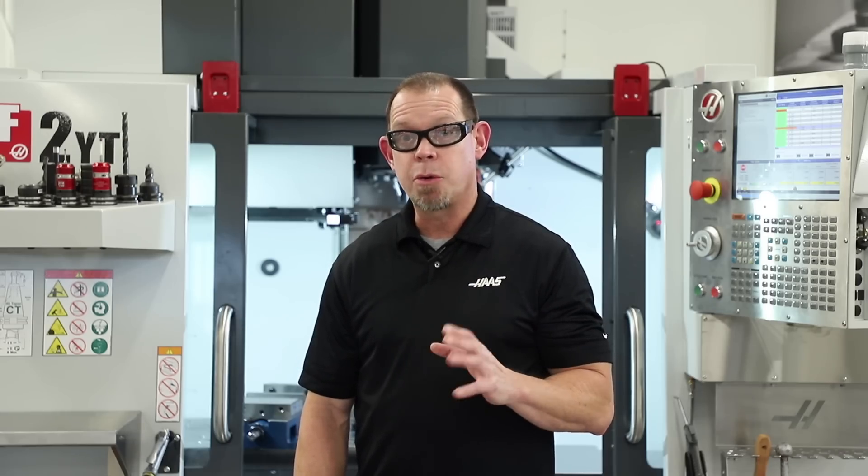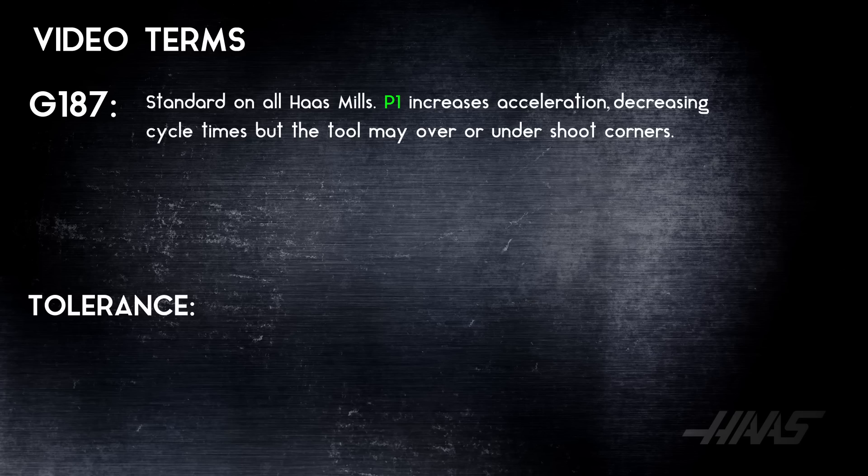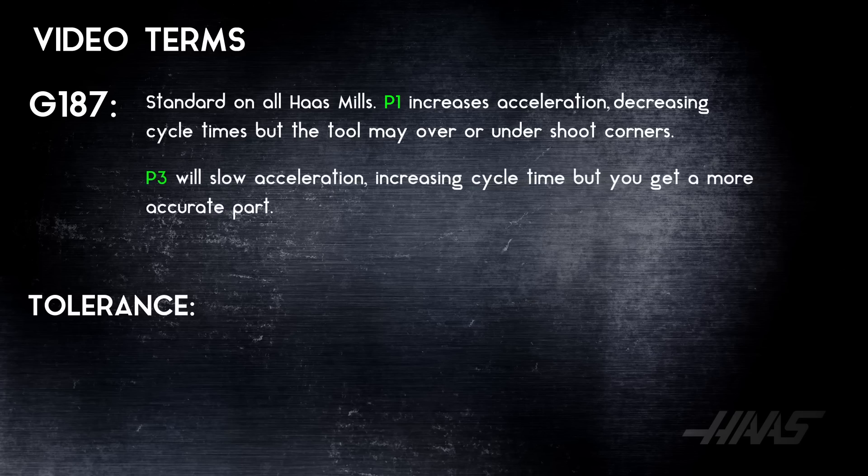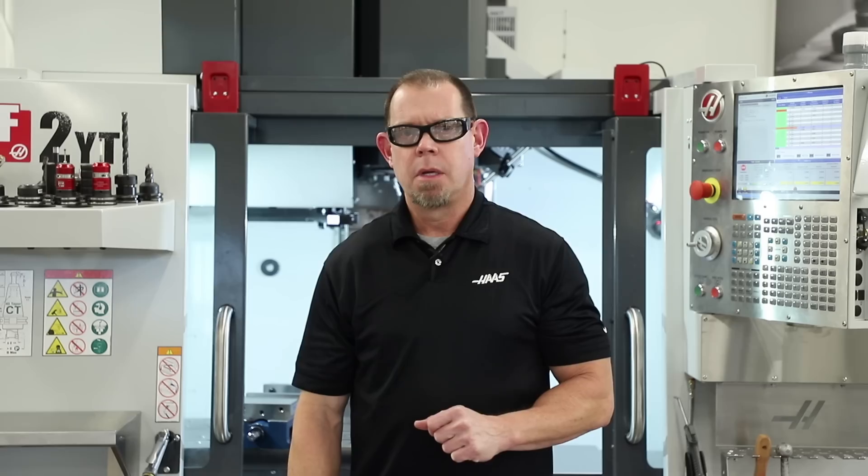A G187 P3 would typically be used for a finishing pass. P3 will slow accelerations, which means an increased cycle time, but a more accurate part.